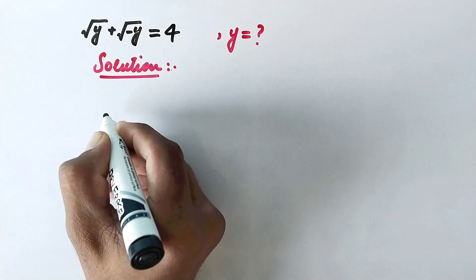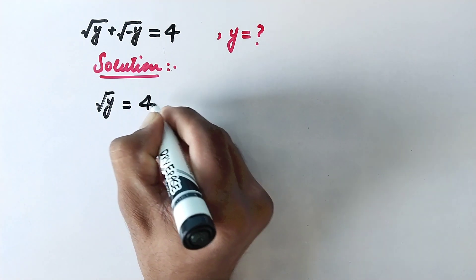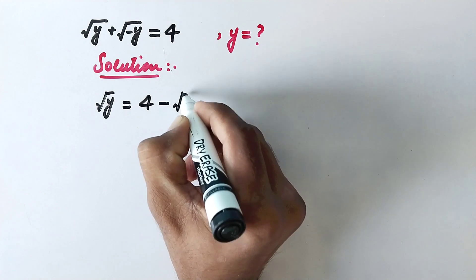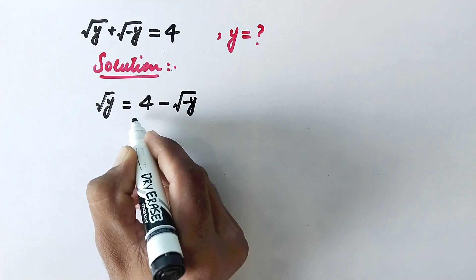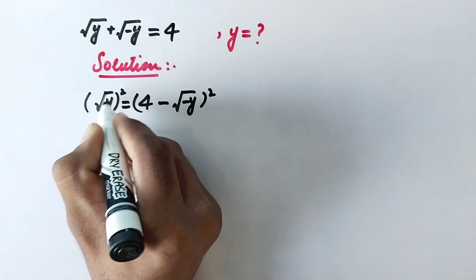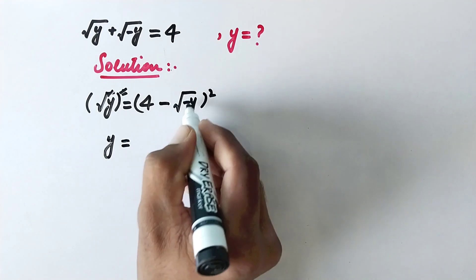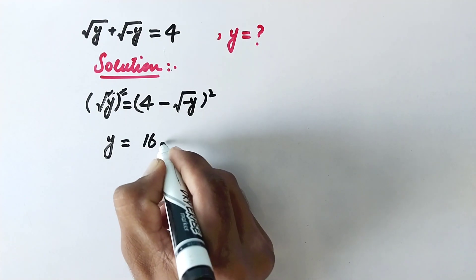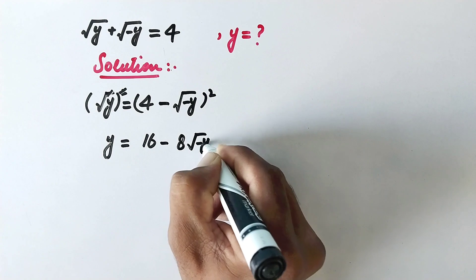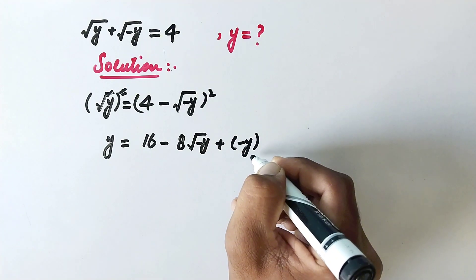In the first step, we will write square root of y is equal to 4 minus square root of negative y, since this positive value will be negative on the other side of the equation. Now we will take square on both sides of the equation, so the square root will be cancelled by the square, and y is equal to...